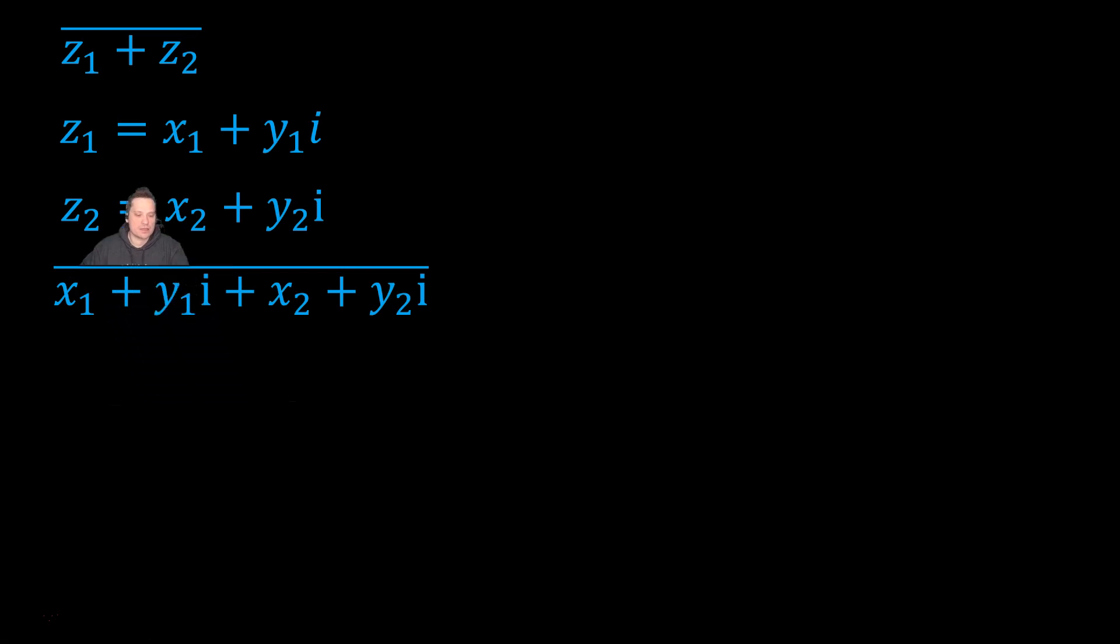So that means the following: where I see z sub 1 in the top expression that can be replaced with x sub 1 plus y sub 1 i. And wherever I encounter z sub 2 in the top expression, that can be replaced with x sub 2 plus y sub 2 i. And keep the conjugation bar above the whole expression the entire time.